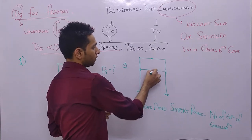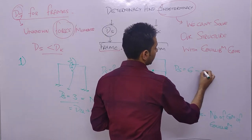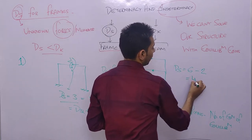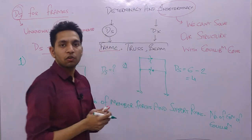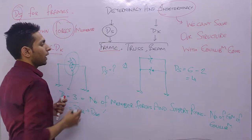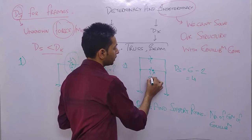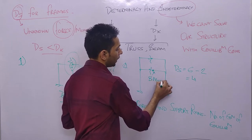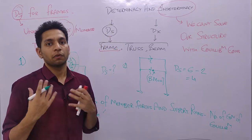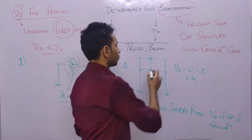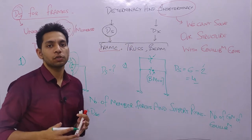For this structure, the static indeterminacy is 4. You find three forces at one cut and three unknown forces at another cut. Since a hinge is present, the bending moment at that point equals zero, giving one equilibrium condition. With two more equilibrium conditions, you solve to get the degree of static indeterminacy.